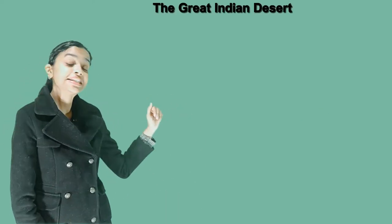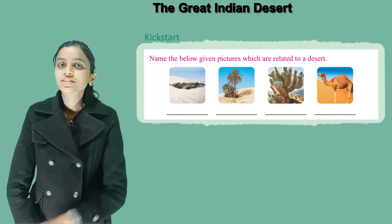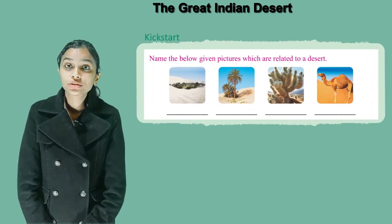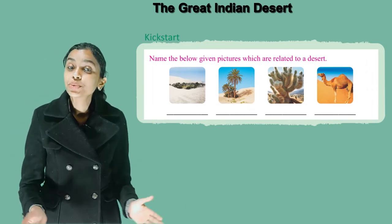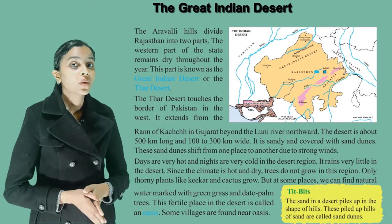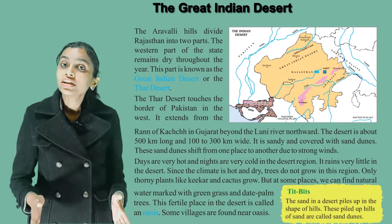Hello students, I'm Priyanka and I'm your mentor. Today we'll start with chapter number 4, that is the Great Indian Desert. Let's kick start — name the below given pictures which are related to a desert.